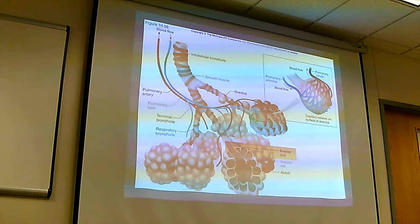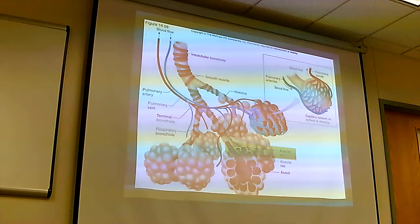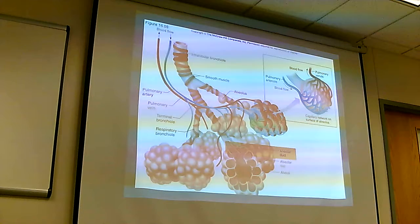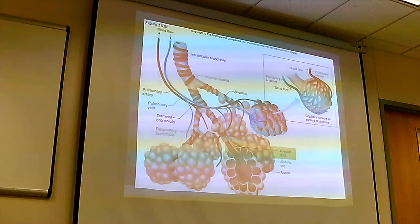Preterm infants don't develop surfactant until approximately week 32 to 34 in utero. So if you respond to a preterm delivery, that baby won't have surfactant — the alveoli will be like trying to blow up a fresh balloon, very hard to inflate.